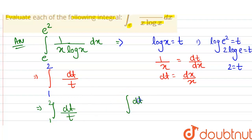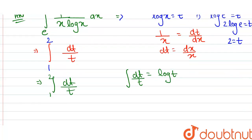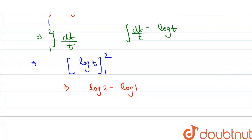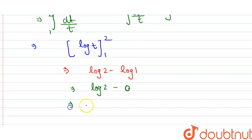Using the formula ∫dt/t = log t, we evaluate from 1 to 2. This gives log 2 − log 1. Since log 1 = 0, the result is simply log 2.